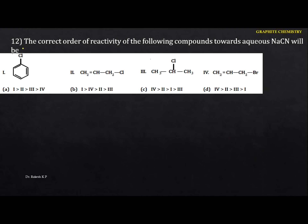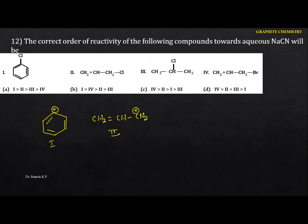Next: identify the correct order of reactivity toward aqueous sodium cyanide (nucleophilic substitution). For the first compound (aryl halide), breaking the C−Cl bond gives a phenyl carbocation — very difficult. The second compound gives a benzyl-type carbocation, and the third gives a secondary carbocation. The fourth compound (CH2=CH−CH2−Br) on dissociation gives an allylic carbocation.